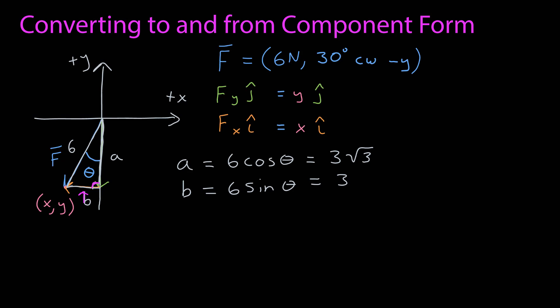I can do the same thing for the length of b for this triangle. Sine theta is opposite over hypotenuse, and so b is 6 sine theta, which is just 3.